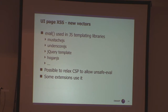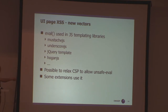You can imagine that once you allow 'unsafe-eval', it becomes possible to exploit the extension via abusing the eval function. So many extensions currently, because they use JS templating libraries, are vulnerable because they relax their own content security policy. That's an interesting thing to look at when assessing the code of an extension. But there's another vector: content scripts are not subject to content security policy — only the UI pages are.